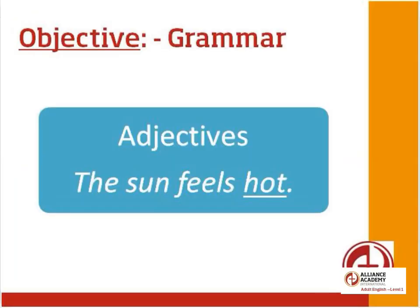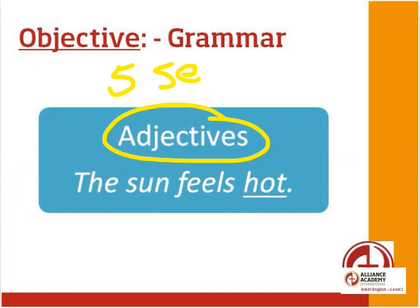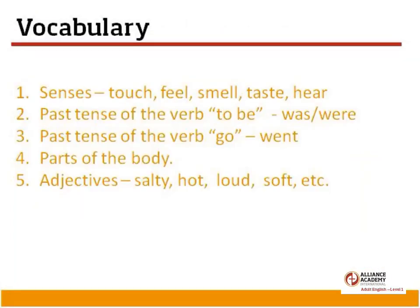The grammar objective is adjectives, and because we are talking about the five senses, there are a lot of adjectives that we need to remember. For example: the sun feels hot. That's one very simple example of the many adjectives we need to know for Module 7. So let's look at important vocabulary that we will need to know.